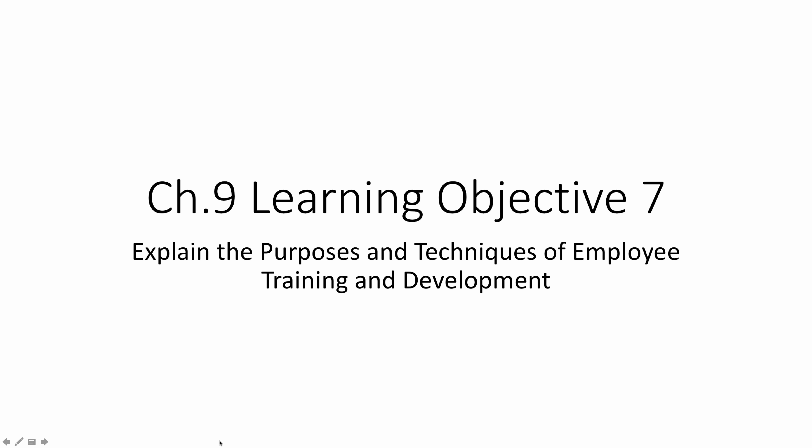Learning Objective 7 in Chapter 9 will explain the purposes and techniques of employee training and development. You have to ask yourself, why would a company do additional training and development once they've already hired the employee? Usually the reason is because they've hired someone they think is going to make a good employee, but maybe they haven't got all the right training completely at this time, so they can send them to training sessions or seminars, or they can train them within the company.